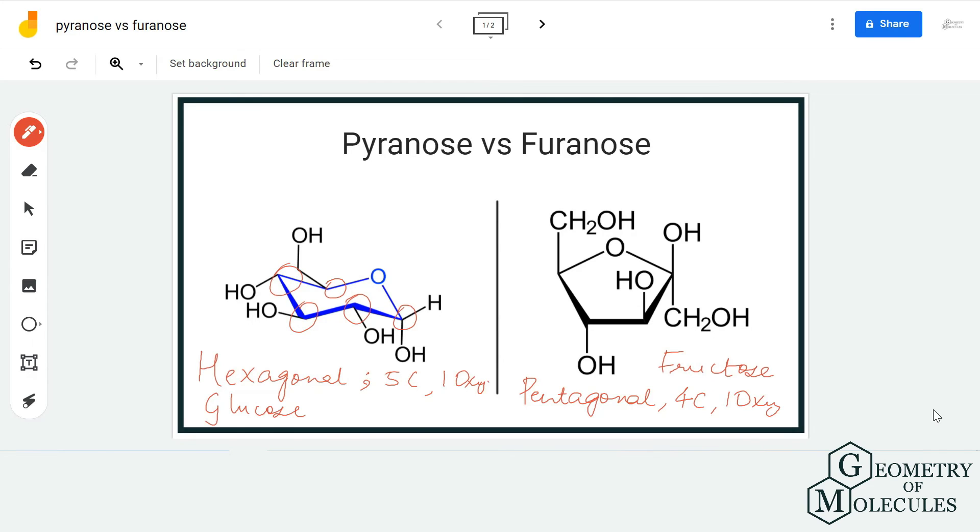These are both common ring structures that you will see in different types of sugar. The main difference between pyranose and furanose is the number of carbon atoms in the structure, which results in different properties of the sugar molecules. I hope this video helps you understand these differences.